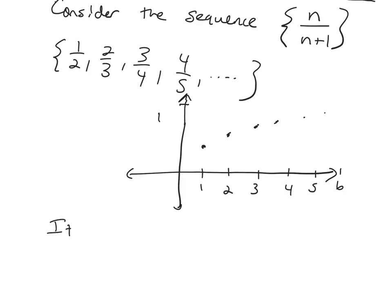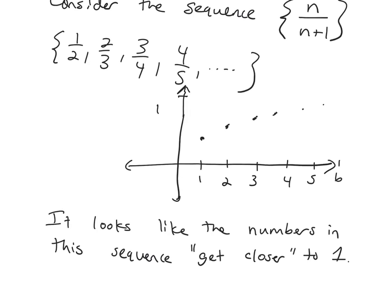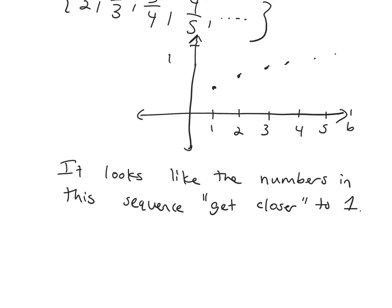It looks like the numbers in the sequence get closer to 1. So let's see if we can formalize that. Closer is a distance measurement. So I just need to take the difference between 1 and the terms in my sequence.